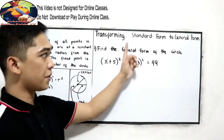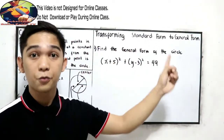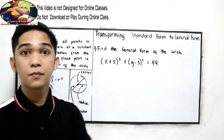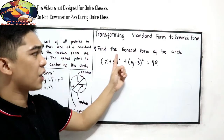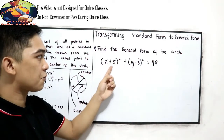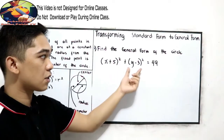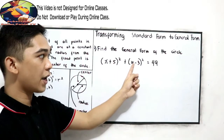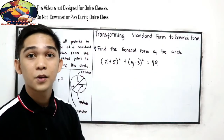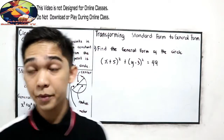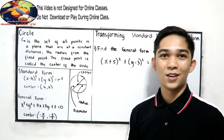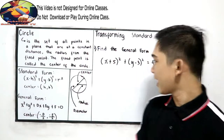Our lesson: transforming standard form to general form. Let's have problem number one. Find the general form of the circle: the quantity x plus 5 raised to the 2nd plus the quantity y minus 3 raised to the 2nd is equal to 49. We're going to transform into this form. Okay, let's start.